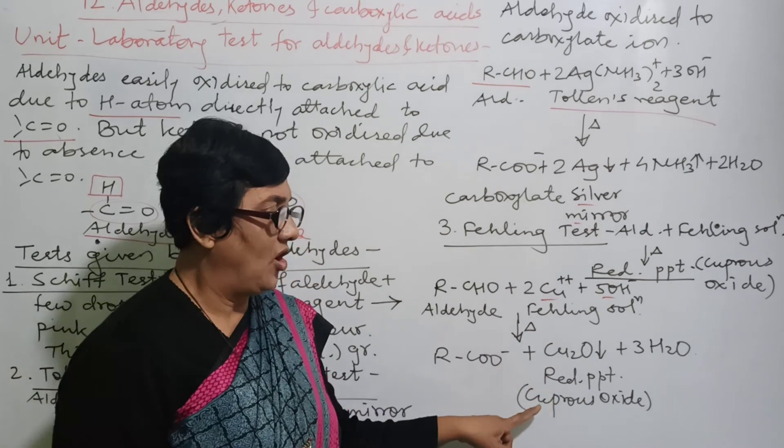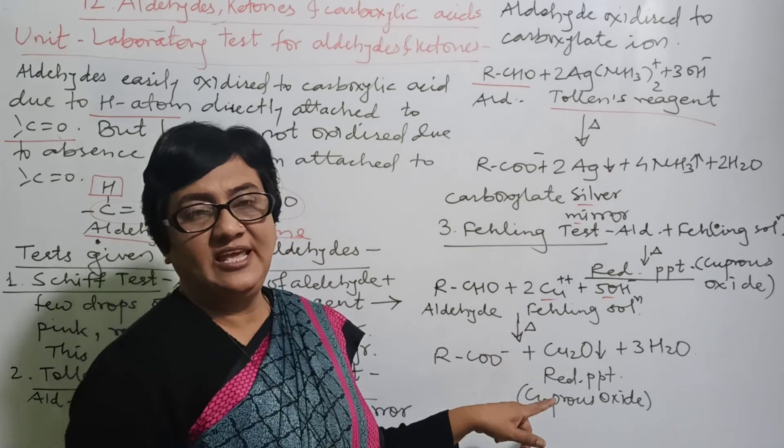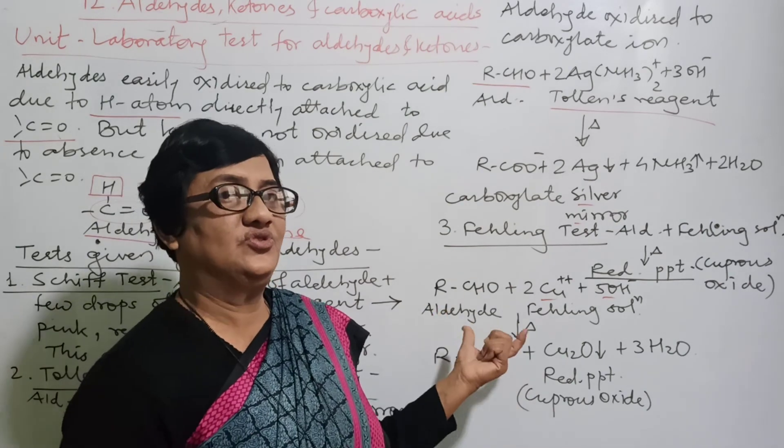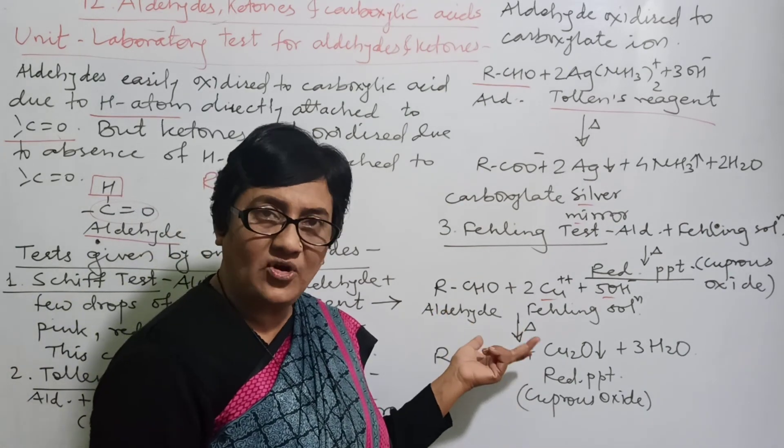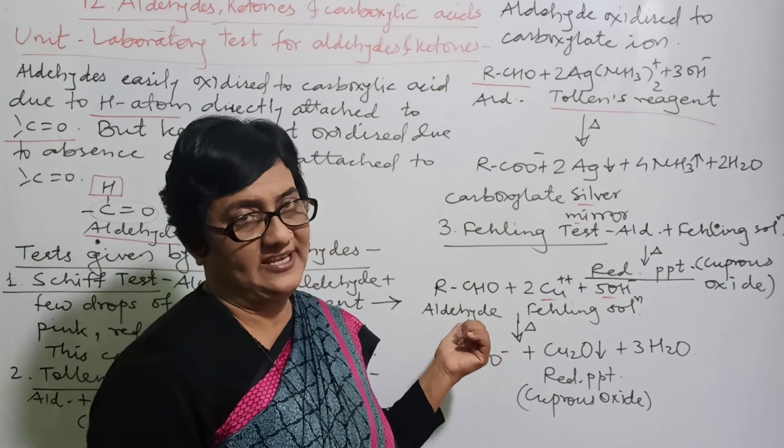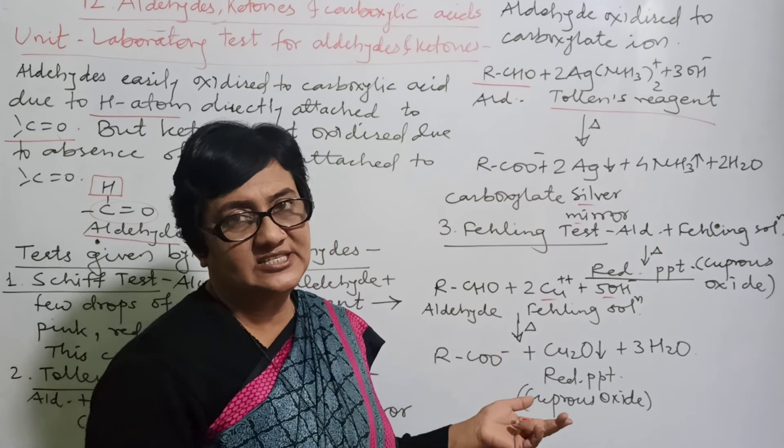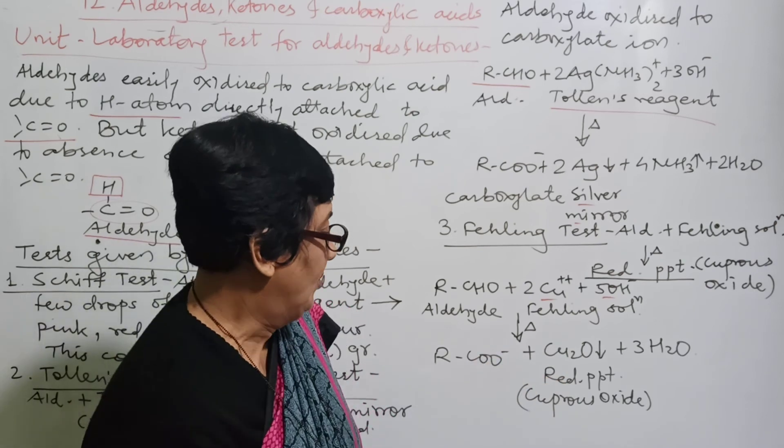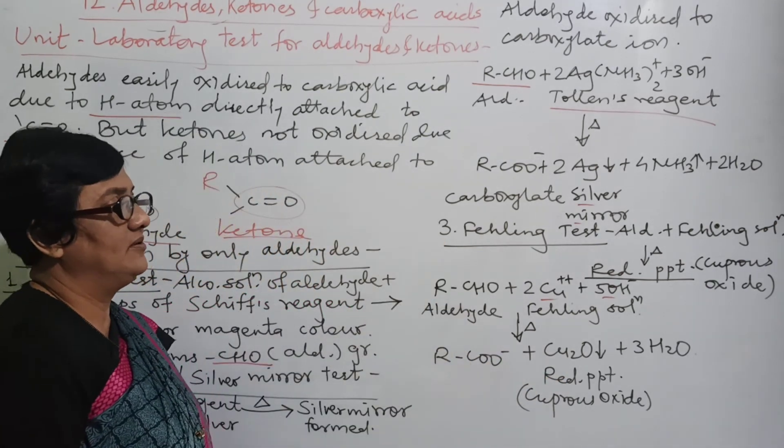Same carboxylate group is formed, carboxylate ion is formed, plus Cu2O. This reaction occurs here and cuprous oxide which is red colored, we will see. And because of this red color, we come to know that the solution in which we added Fehling solution and boiled, this color we are getting is because of the aldehyde group. In this way, we can differentiate aldehyde and ketone.